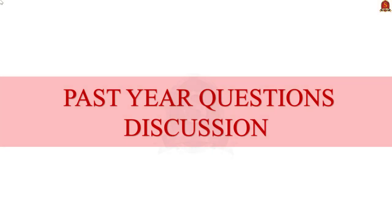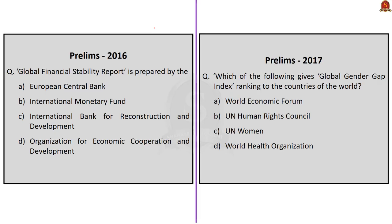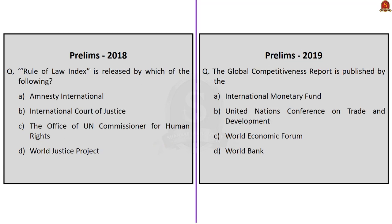Now let us solve some past prelims questions. Reports and indices are an important topic from a prelims perspective. Look at the 2016, 2017, 2018, and 2019 questions — all were asked from reports and indices. We can see that reports and indices are a favorite topic of UPSC. They are being repeatedly asked. With this in mind, let us solve these questions.